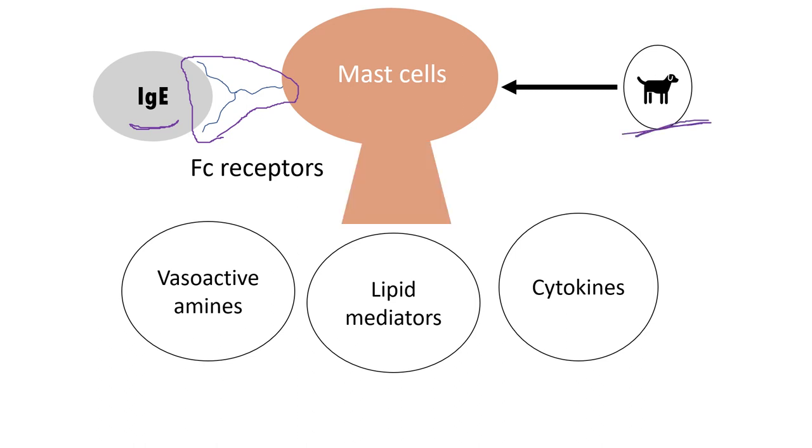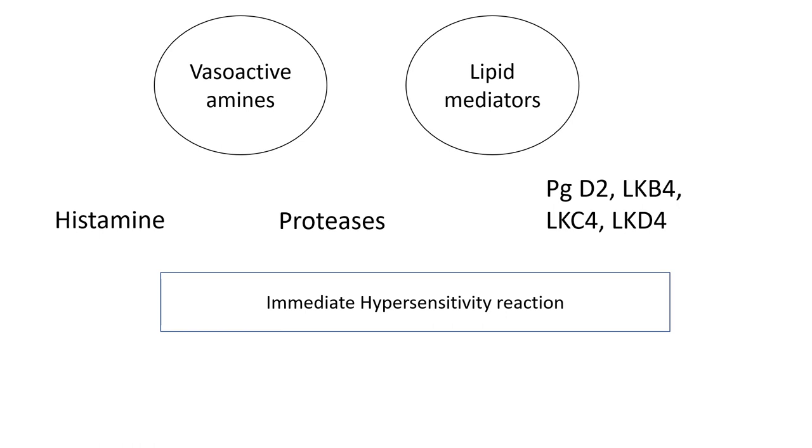The next time this allergen comes in contact with the body, it will lead to degranulation of mast cells, leading to release of vasoactive amines, lipid mediators, and cytokines. The immediate hypersensitivity reaction is caused by these vasoactive amines and lipid mediators. The vasoactive amines consist of histamine and proteases, while lipid mediators consist of prostaglandin D2, leukotriene B4, leukotriene C4, and leukotriene D4.